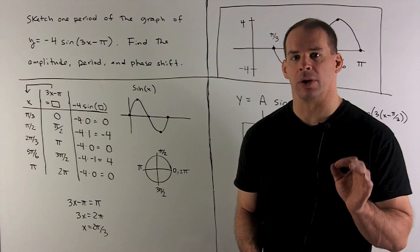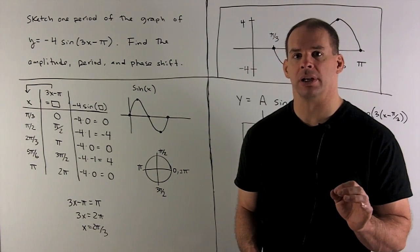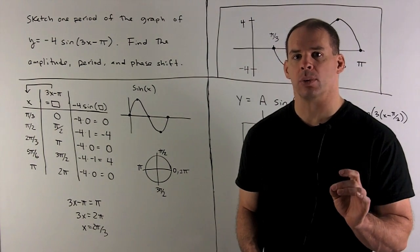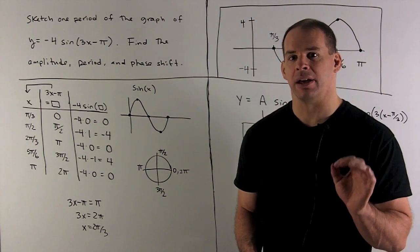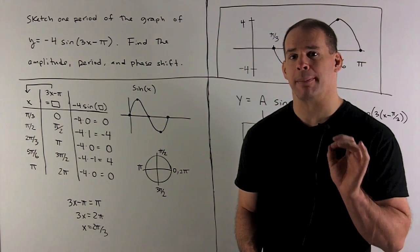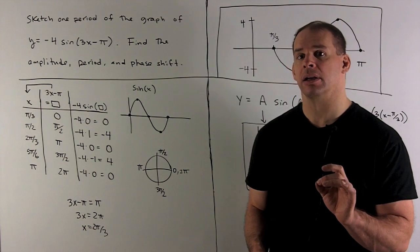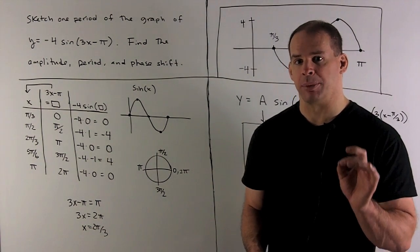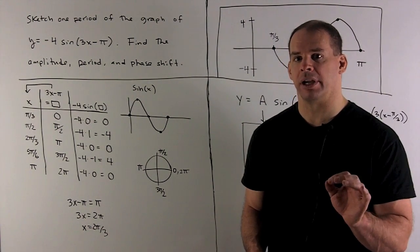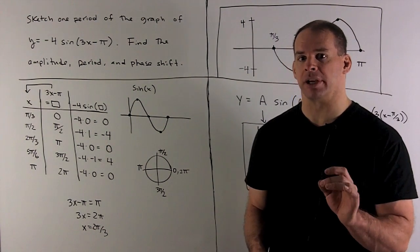Sketch one period of the graph of the function y equals minus 4 sine of 3x minus pi. Then, find the amplitude, the period, and the phase shift.